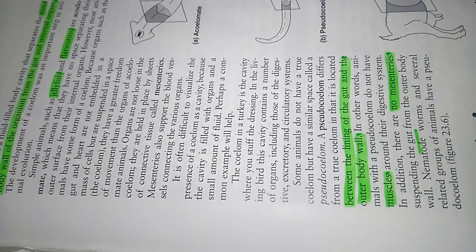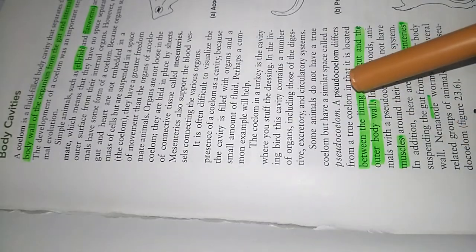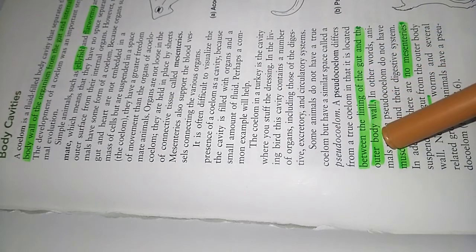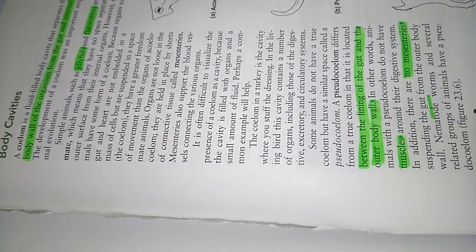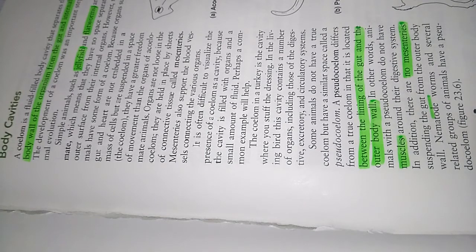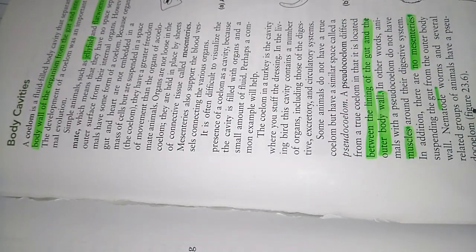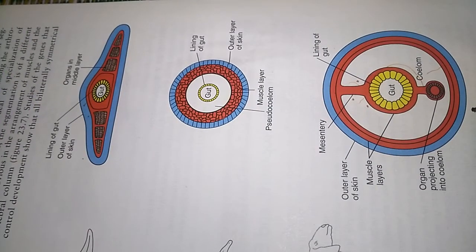The pseudocoelom differs from a true coelom and is present between the lining of the gut and the outer body wall. In other words, animals that have a pseudocoelom have no muscles around the digestive tract, as well as no mesenteries. Examples of pseudocoelomates include nematodes and several related groups of animals. This is all about body cavities — thanks for watching.